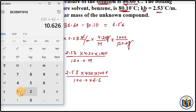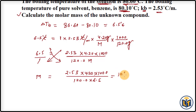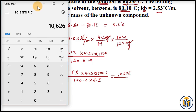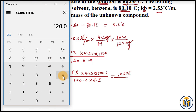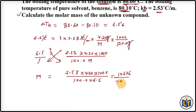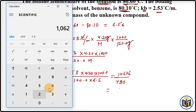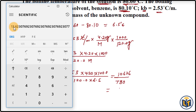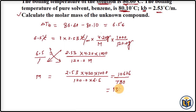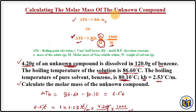Multiplying the top values: 2.53 × 4.20 × 1000 = 10,626. Multiplying the bottom values: 120.0 × 6.5 = 780. Dividing 10,626 by 780 gives us the molar mass of the unknown compound: 13.62 grams per mole.